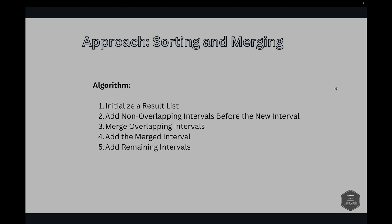Next is merging overlapping intervals. For each interval that overlaps with the new interval — where the interval's start time is less than or equal to the new interval's end time — we update the start and end of the new interval using min and max respectively. After processing all possible overlaps, we add the merged new interval to the merged list, then append the remaining intervals that start after the merged interval.